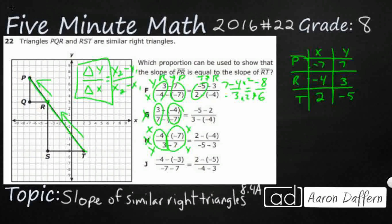For option J, negative 4 over negative 7 — those are two x-coordinates, so it needs to be a y over x. And negative 3 isn't even one of my coordinates at all, so that's not going to work. So even though you've got all of these coordinates, you really need to figure out which ones are the x's and which ones are the y's. Remember it needs to be y over x. My answer here is F.